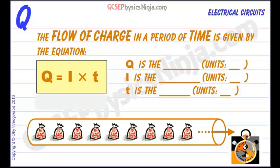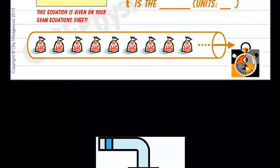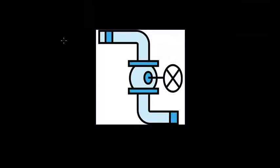The flow of charge in a period of time is called the current. Think of it like water flowing in a pipe. The water is our charge and we pump some in from the top, send it through the pipe and it comes out the bottom.